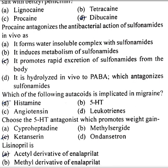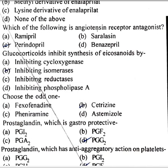Which of the following autocoids is implicated in migraine? Histamine. Choose the 5-hydroxytryptamine antagonist which promotes weight gain: ketanserin. Lisinopril is an acetyl derivative of enalaprilate. Which of the following is an angiotensin receptor antagonist? Perindopril. Glucocorticoids inhibit synthesis of eicosanoids by inhibiting phospholipase.